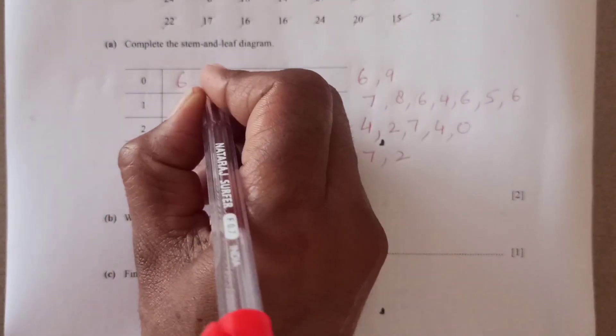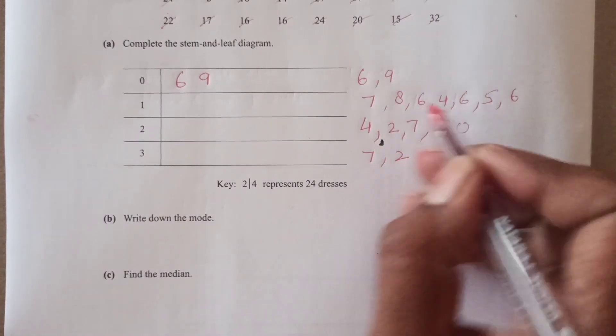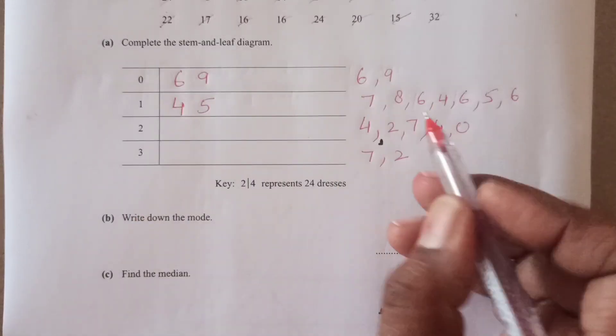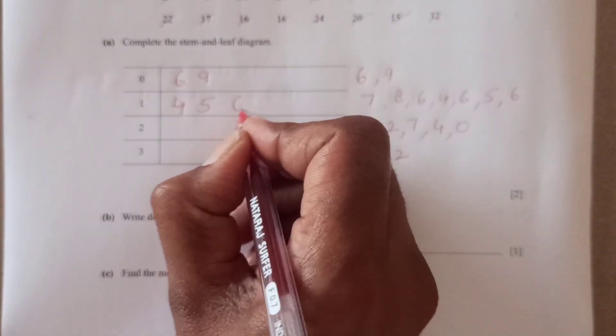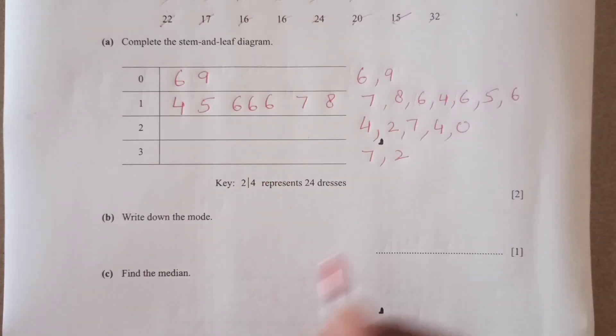Now you see we got all the numbers. Now we are just going to write down it in order. So here we have 6 and 9. This is 7, 8, 9. First of all, we will write here 4, then 5. Then 6 is coming 1, 2, 3 times. Then we have 7 and 8, right?